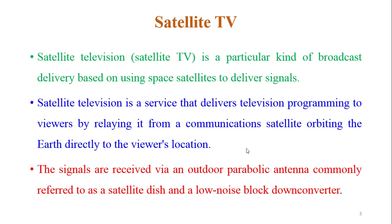As we are going to study about satellite TV signals using a transponder, let's first understand satellite TV. Satellite TV is a kind of broadcast delivery based on space satellites to deliver signals directly to the television. It is a type of service in which television programming is directly relayed by the satellite. The signals are received by an outdoor parabolic antenna, commonly referred to as a satellite dish or a low noise block down converter.